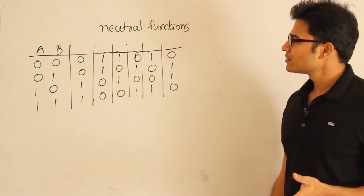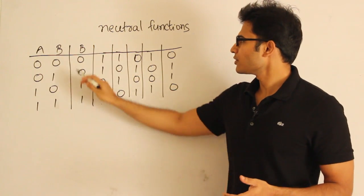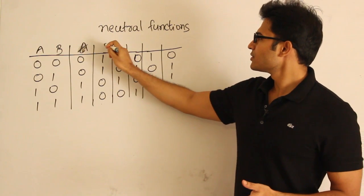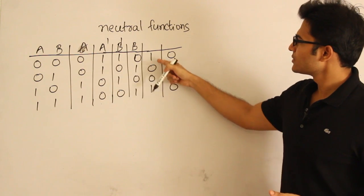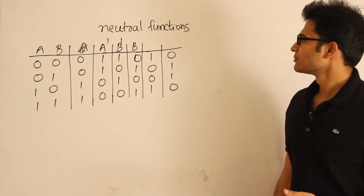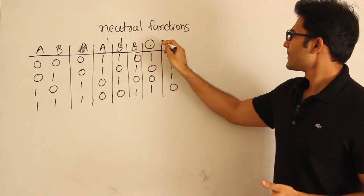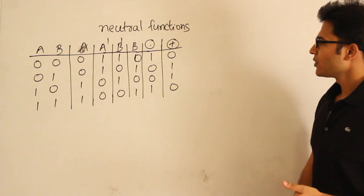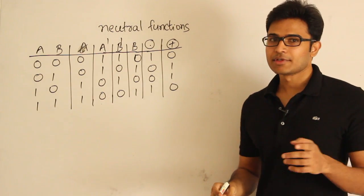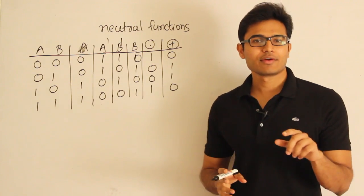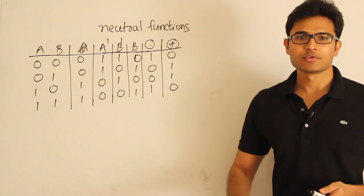These names don't have any special significance related to neutral functions — I'm just writing them to show how they could be represented. The function 0011 is nothing but A; 1100 is A complement; 0101 is B complement; 1010 is B. The function 1001 is XNOR — since 1,1 gives 1 and 0,0 gives 1. And 0110 is XOR. So these are all the neutral functions possible with two Boolean variables. The only defining property is that the number of min terms equals the number of max terms.